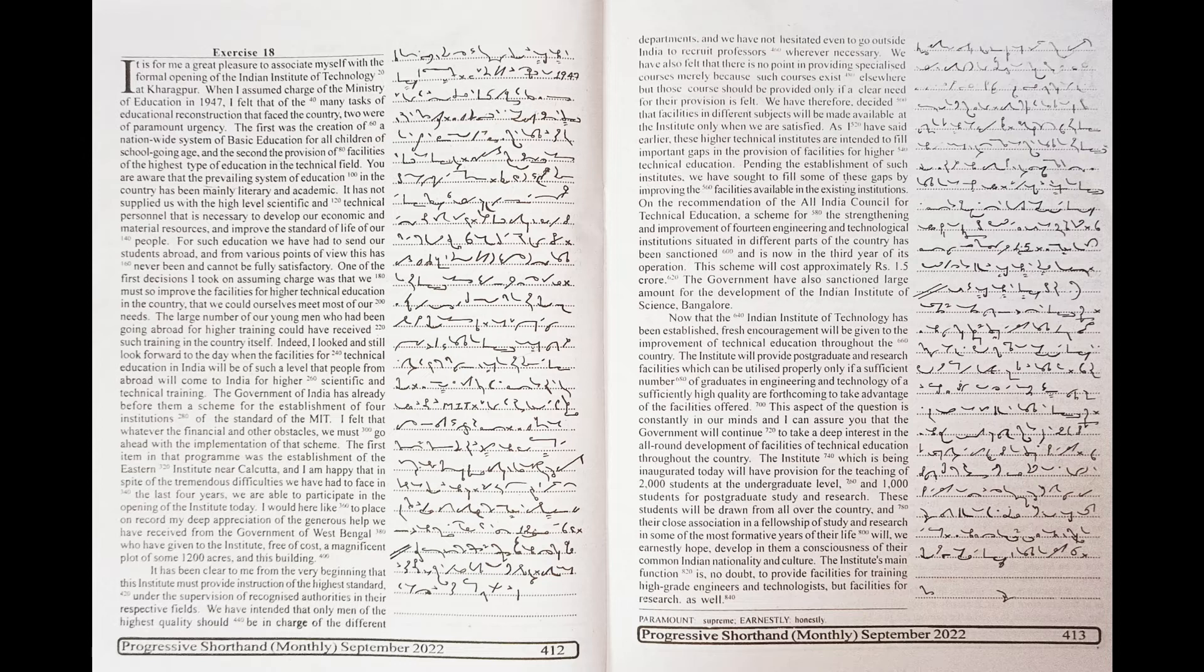a scheme for the strengthening and improvement of 14 engineering and technological institutions situated in different parts of the country has been sanctioned and is now in the third year of its operation. This scheme will cost approximately 1.5 crore rupees. The government have also sanctioned large amounts for the development of the Indian Institute of Science, Bangalore.